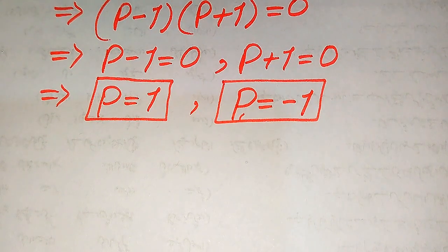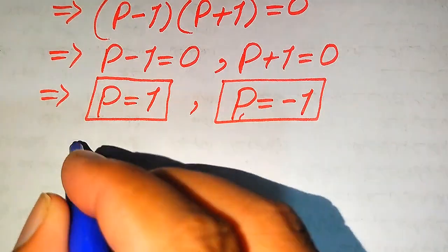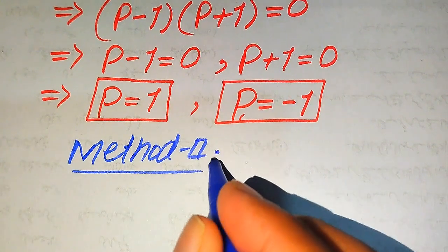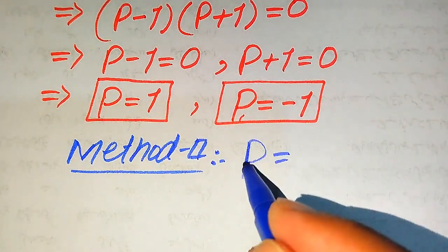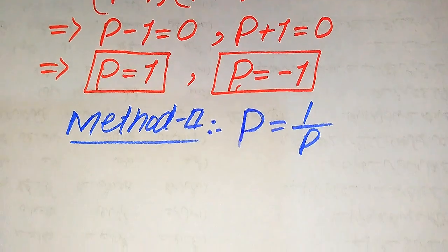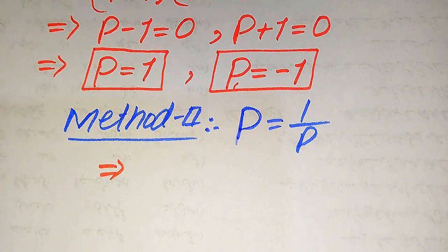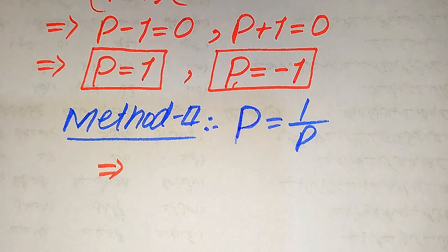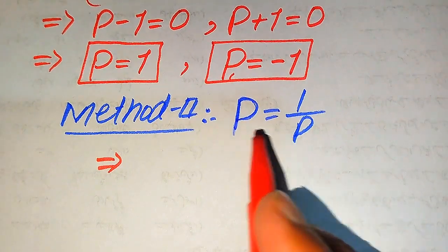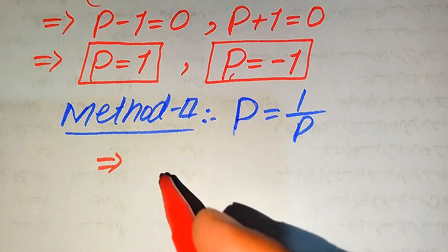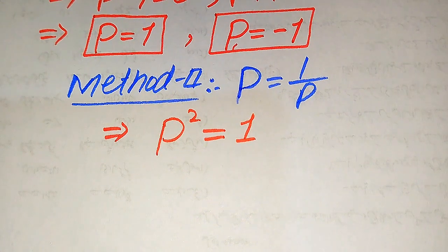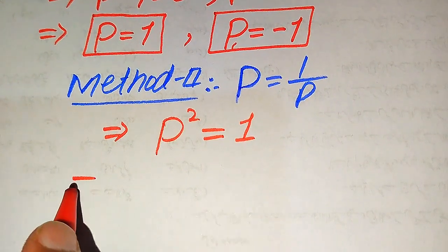Now we solve the same problem using the second method. The given equation is P equals 1 divided by P. Multiplying both sides by P gives P squared equals 1. In this second method, we use the square root technique to find the values of P.